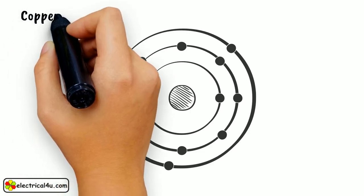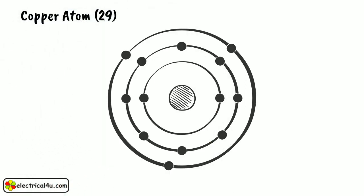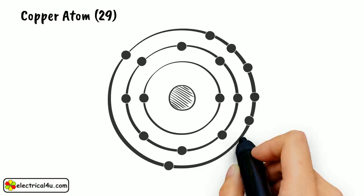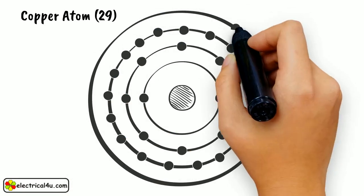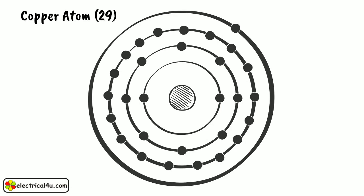Copper has an atomic number 29. Hence, it has a total number of 29 electrons of which 2 electrons occupy innermost shell, 8 electrons occupy next outer shell, 18 electrons occupy next outer shell, and 1 electron occupies outermost shell.